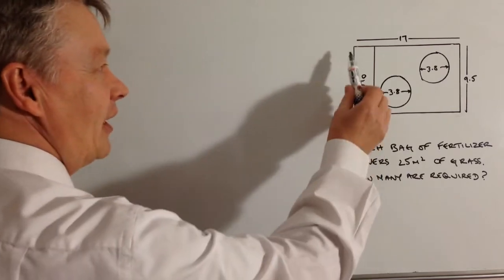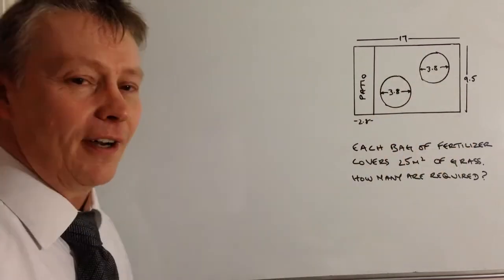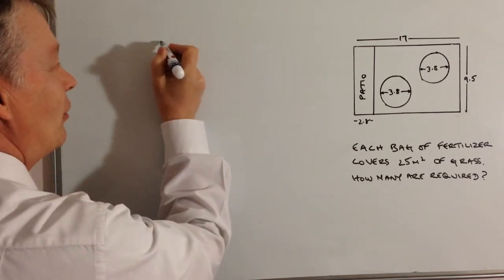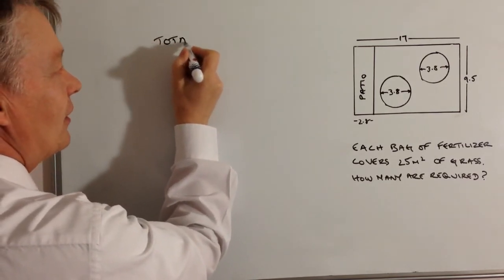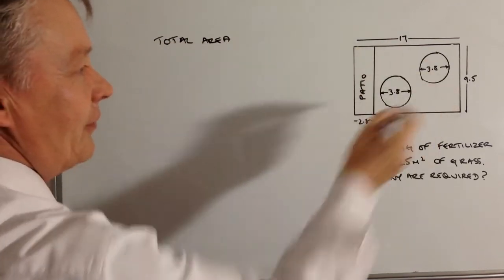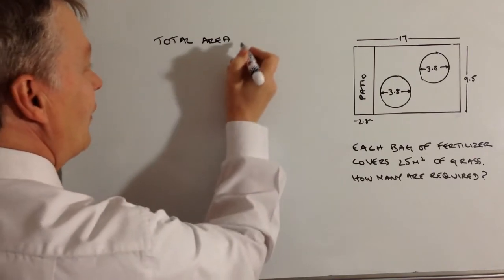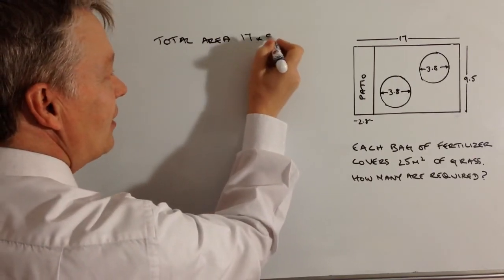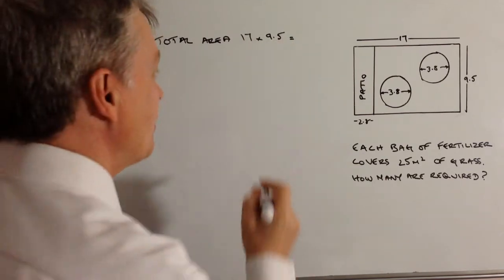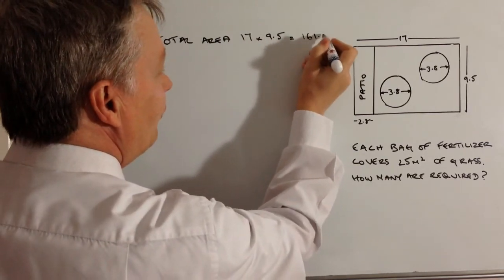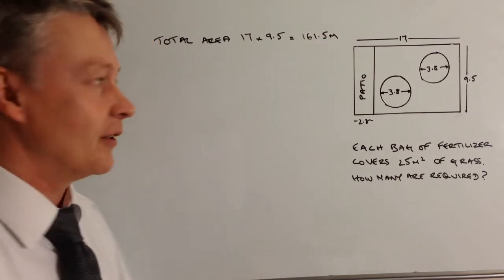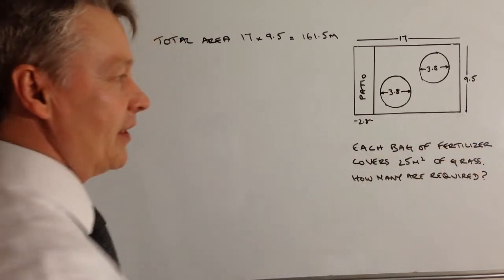Well, let's look firstly at the overall size of the garden. I'm going to have to refer to my notes here because there's quite a lot of calculation, but the overall area of the gardens, the total area is going to be 17 times 9.5. So that's 17 metres times 9.5 metres and that's going to equal 161.5 metres squared. So that's the overall area of the garden. That's this multiplied by this.